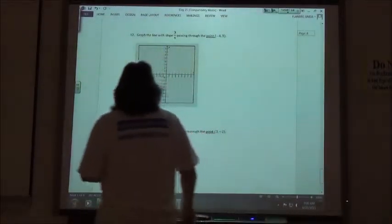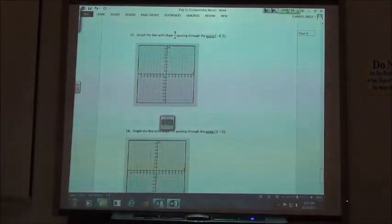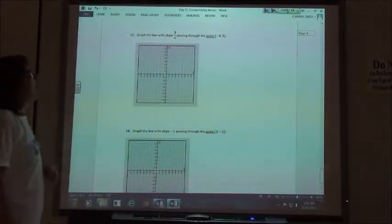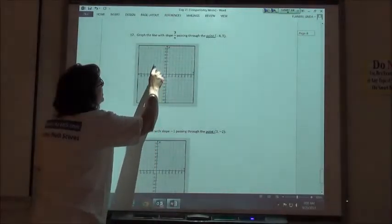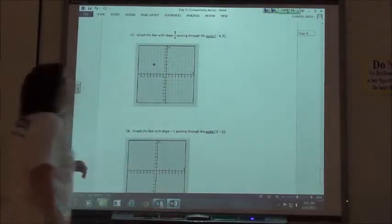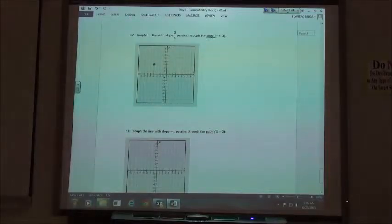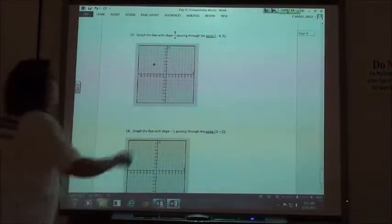So number 17, we want to graph the line with the slope of 3 fourths that passes through the point negative 4, 3. So plotting my point negative 4, 3, back 4 and up 3. And then my slope is 3 fourths. So from that point, I'm going to go up 3 and to the right 4.